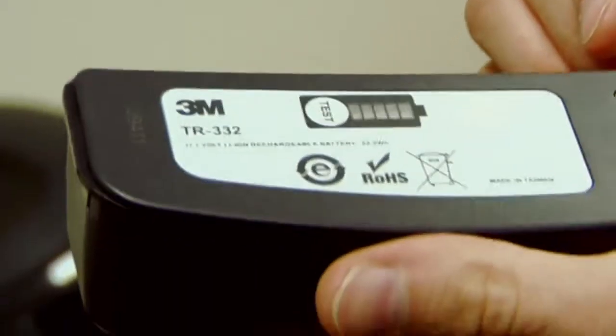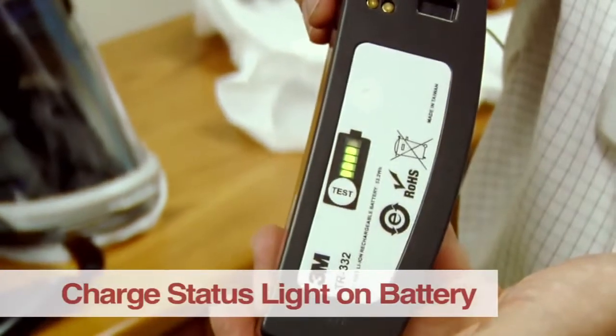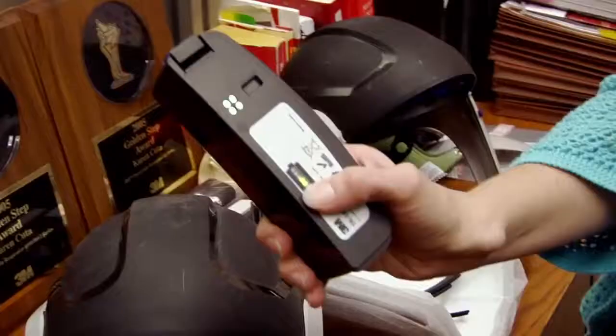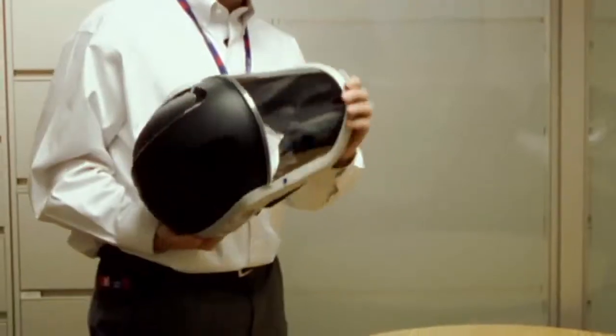One of the great features about the batteries on the TR-300 is a battery indication here where you can push this button and it tells you how much power is left. And that came as a result of customers telling us we have batteries that are sitting around sometimes and we don't know how much charge is on them.